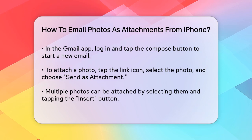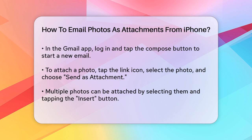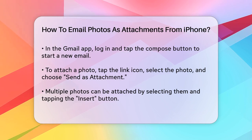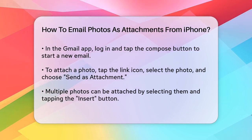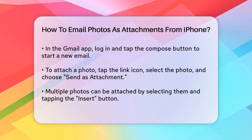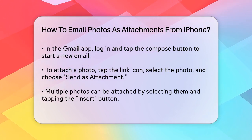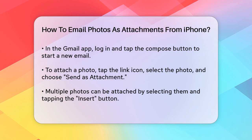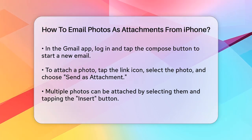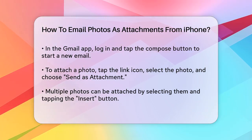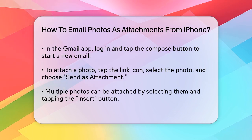Another way to do this in the Gmail app is to select multiple photos at once. When you select more than one photo and tap the Insert button, they will automatically be attached to the bottom of the email. If you're only selecting a single photo, you'll need to tap on it once and then select Send as Attachment to achieve the same result.